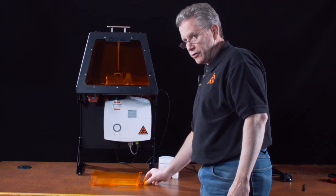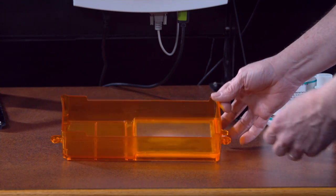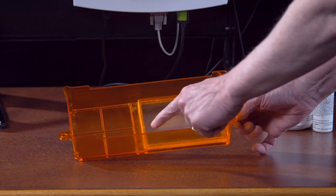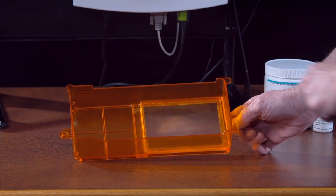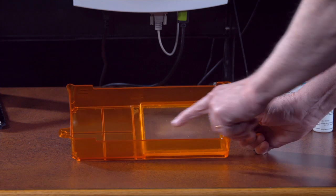All right, today we're going to talk about re-coating your vat. The B9 Creations vat has a PDMS coating that is consumable, that is applied to the acrylic window.